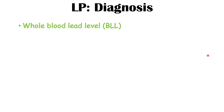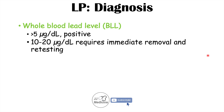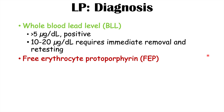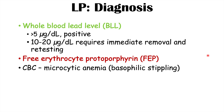Diagnosis is done by measuring a whole blood lead level, or BLL. Anything above 5 micrograms per deciliter is considered a positive finding, and a finding of 10 to 20 micrograms per deciliter requires immediate removal of the source and retesting. Free erythrocyte protoporphyrin, or FEP, can also be measured to indicate the effect on heme synthesis. On a CBC, microcytic anemia is seen — low hemoglobin with MCV less than 80 and normal iron studies — with the key finding of basophilic stippling.